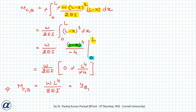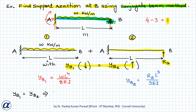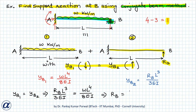Since MCB equals YB1 (downward), we have YB1 = WL⁴/(8EI). Applying the compatibility equation YB1 = YB2: RB·L³/(3EI) = WL⁴/(8EI), which gives RB = 3WL/8.